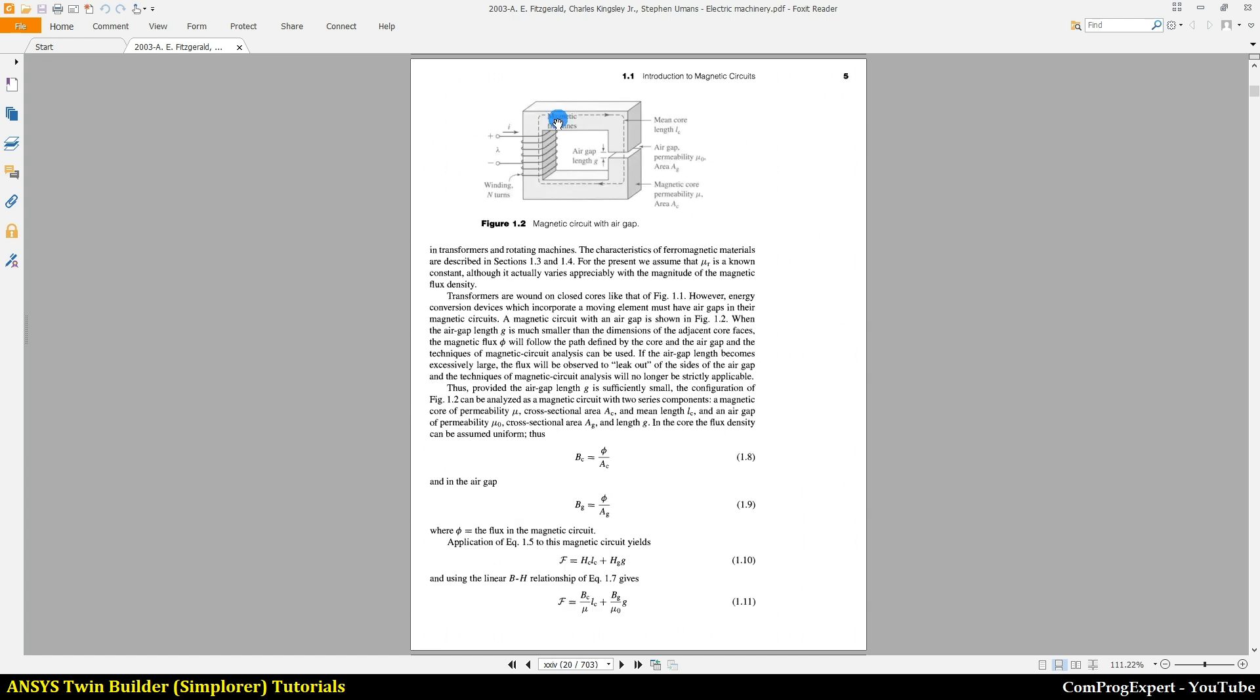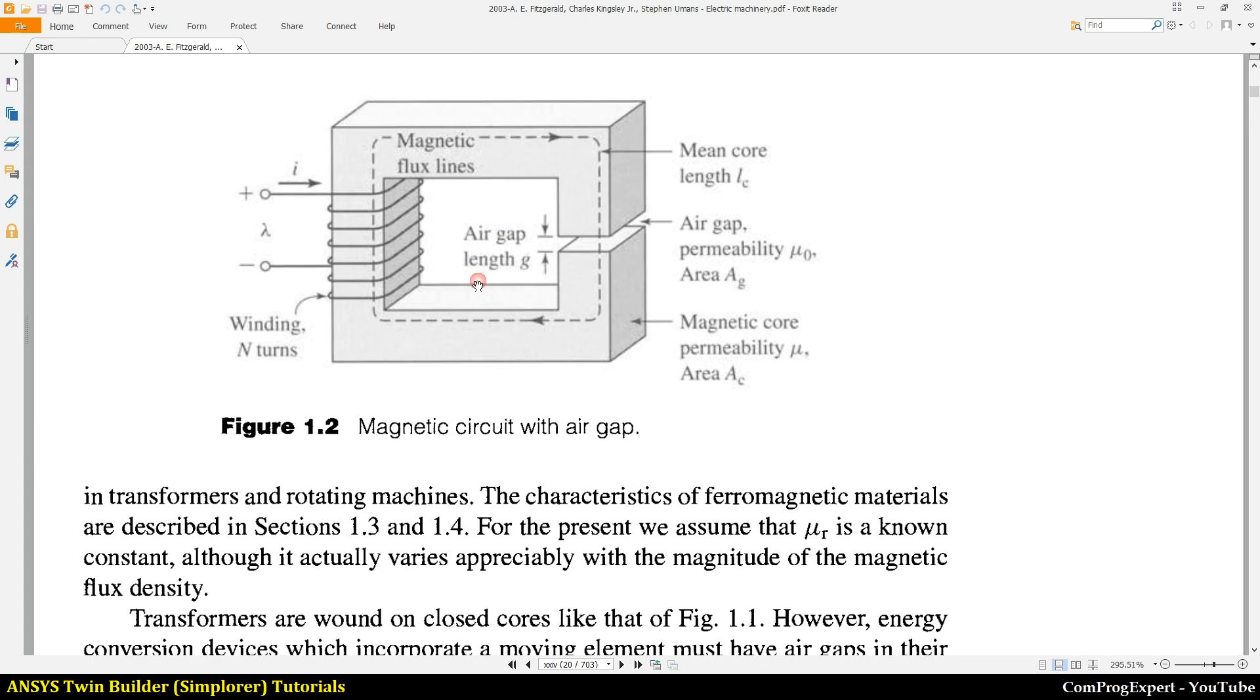Here you can see the magnetic circuit with air gap. This is a C-core iron and we have a winding here, the number of turns is N. This is the direction of the current flow and this is the magnetic flux lines. We have this air gap.